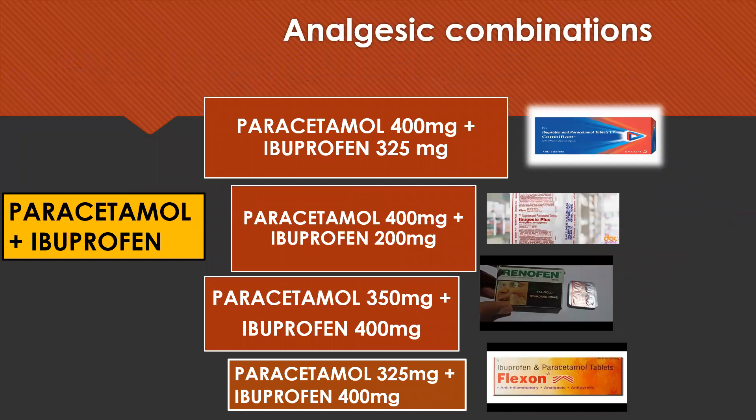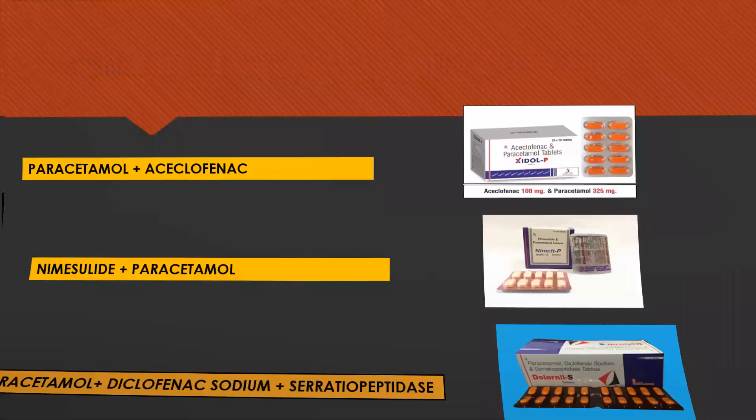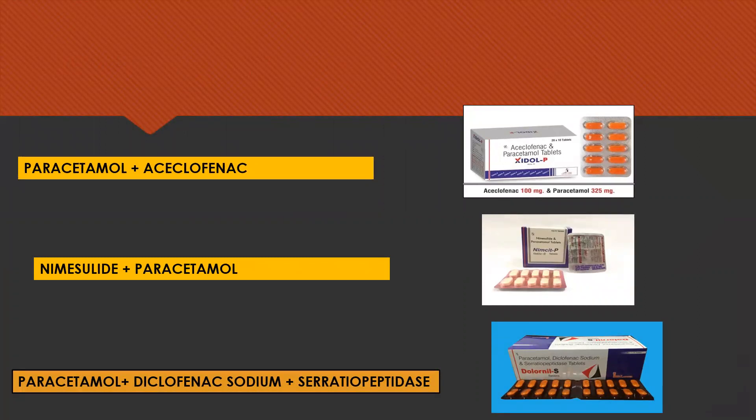Analgesic combinations: the most common combination is paracetamol and ibuprofen, forming drugs such as Combiflam, Ibujic Plus, Renofane, Flexon, etc. Paracetamol can also be combined with aceclofenac, with nimesulide, and the combination of paracetamol, diclofenac sodium, and serratiopeptidase is another combination analgesic.